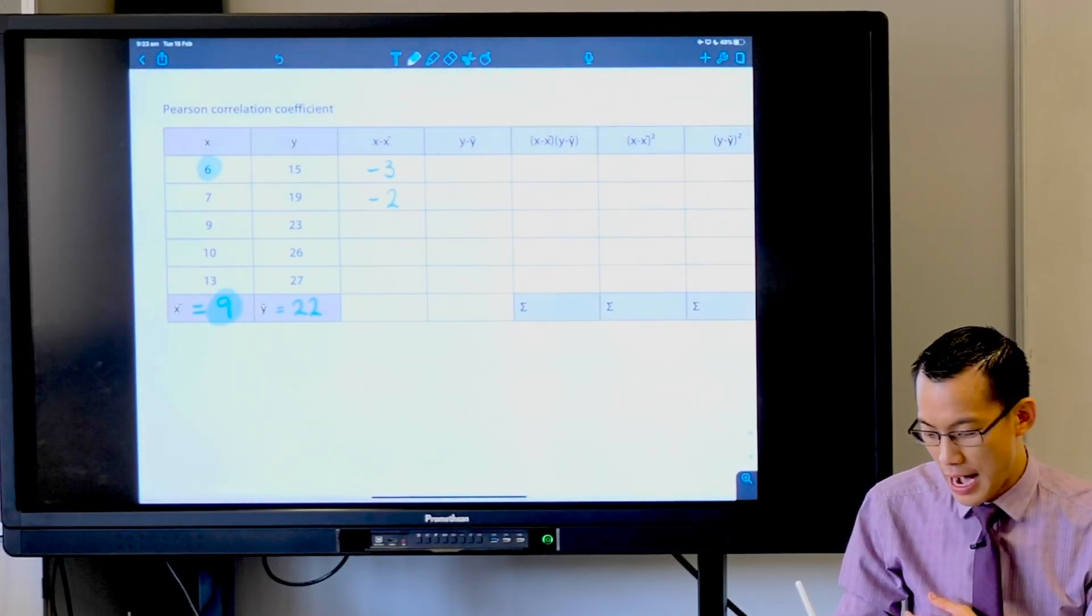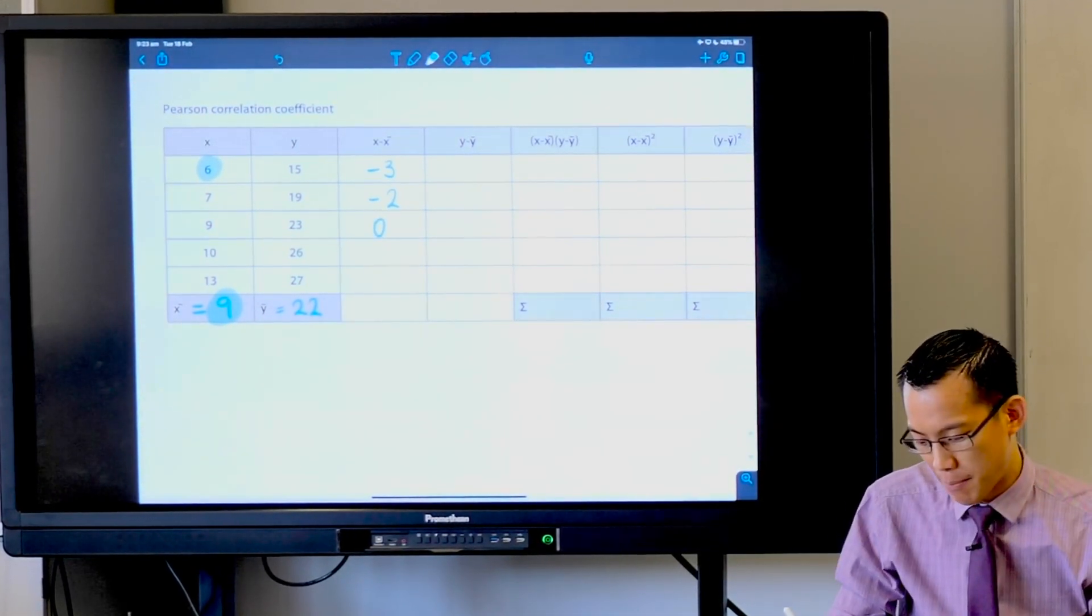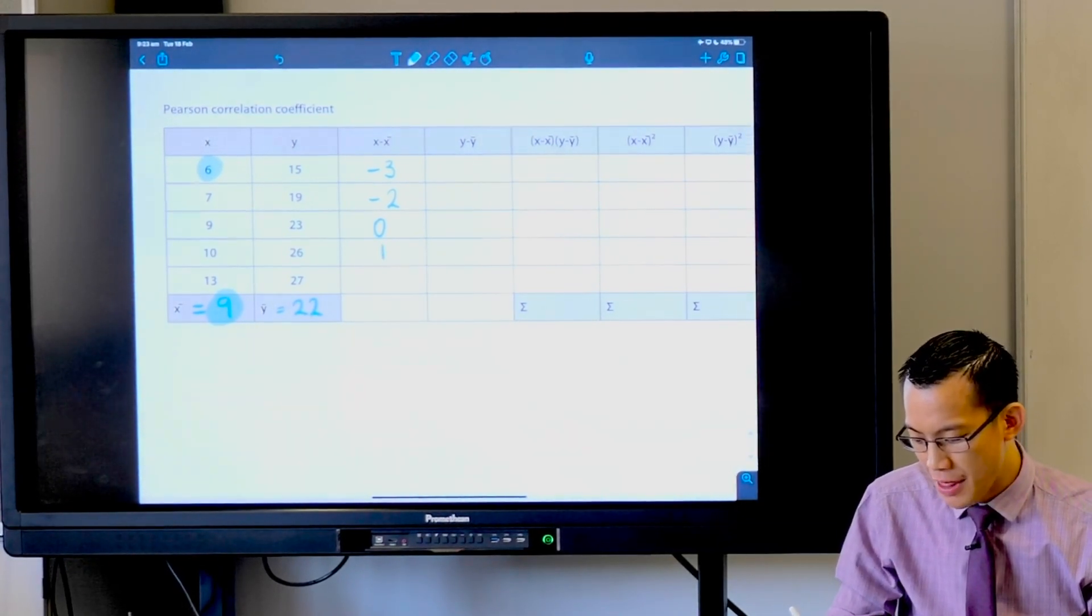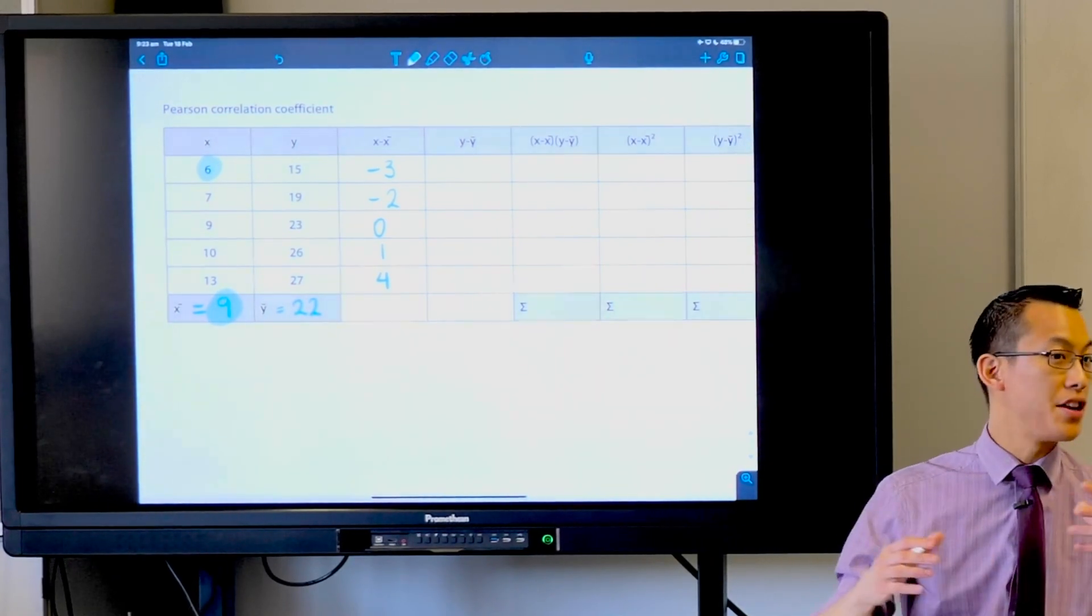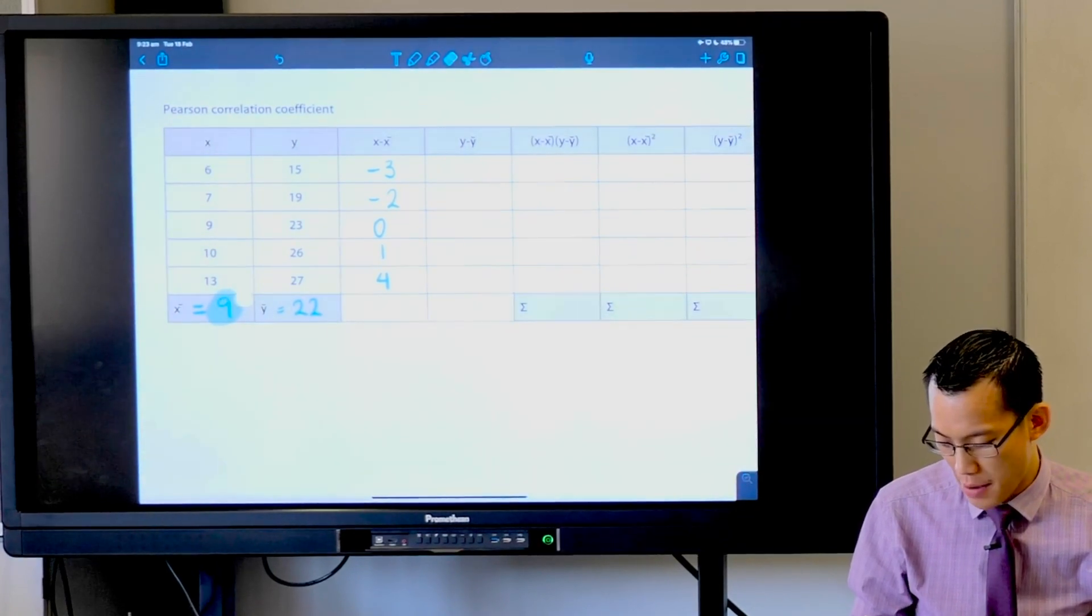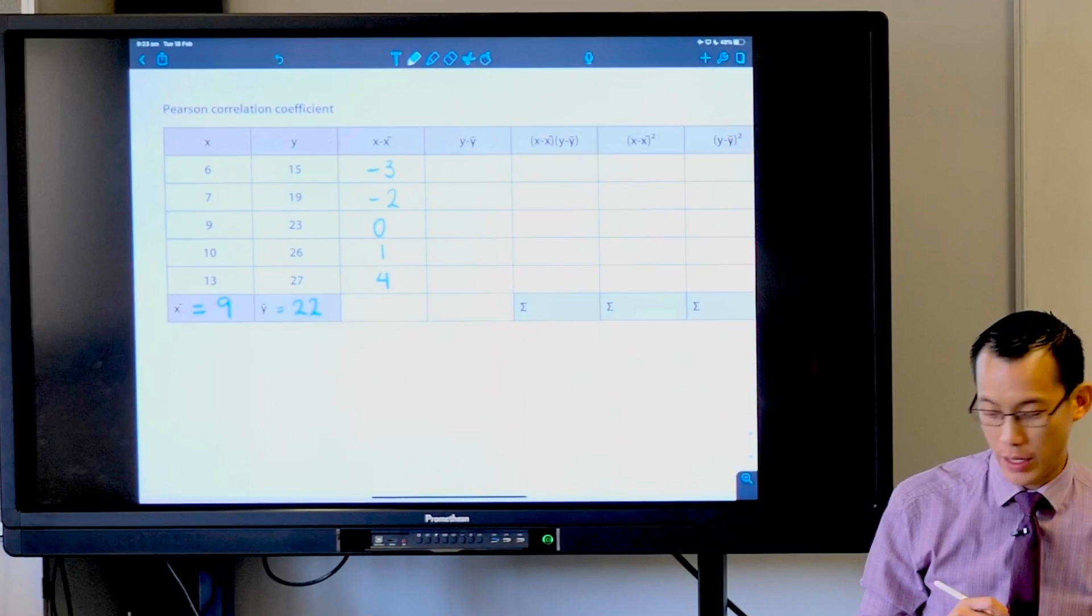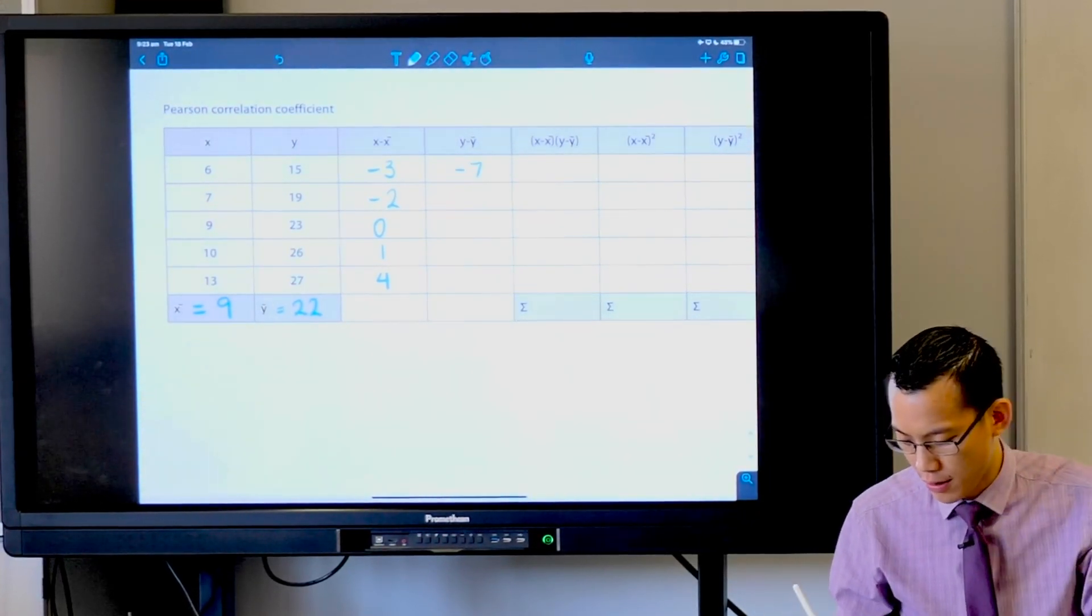Ten take away nine, and then thirteen take away nine. So there are my x minus x-bar values. You can do the same for the y-bar values: y minus y-bar. First one's fifteen take away twenty-two, which is negative seven, and you can carry on from there.